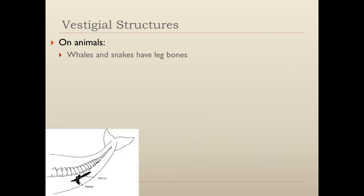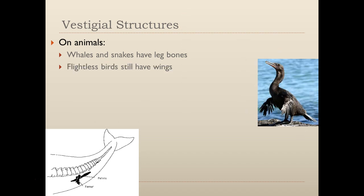Let's look at some vestigial structures in animals. Whales and snakes have leg bones — and as you may have noticed, whales and snakes don't have legs. Why do they still have these bones? They're descended from creatures that did have legs. They still have the bones, but they no longer do what they were originally evolved to do. Flightless birds still have wings. This is the flightless cormorant. They still have wings, but if you notice how ratty those wings are, they can't fly with them — they even still flap them. They are fantastic swimmers, some of the best around, but they still have wings only because their ancestors did.